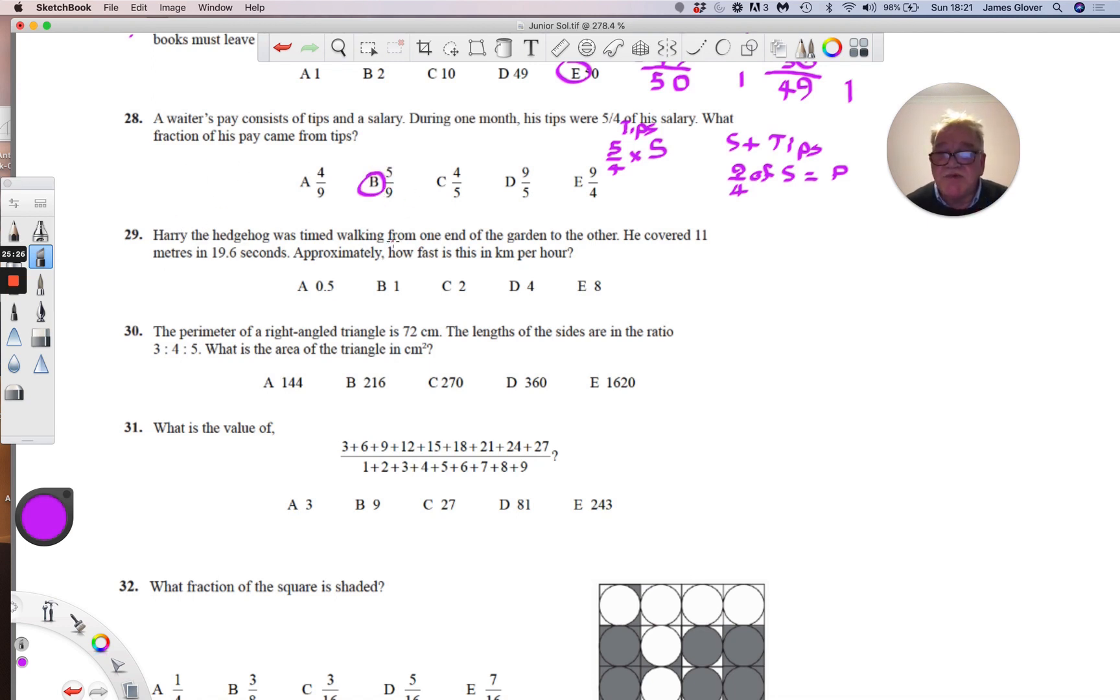Harry the hedgehog was timed walking from one end of the garden to the other. He covered 11 meters in 19.6 seconds. Approximately how fast is this in kilometers per hour? So if he does 11 meters in 19.6 seconds, this is approximately equal to 10 meters in 20 seconds. So this is an estimation.